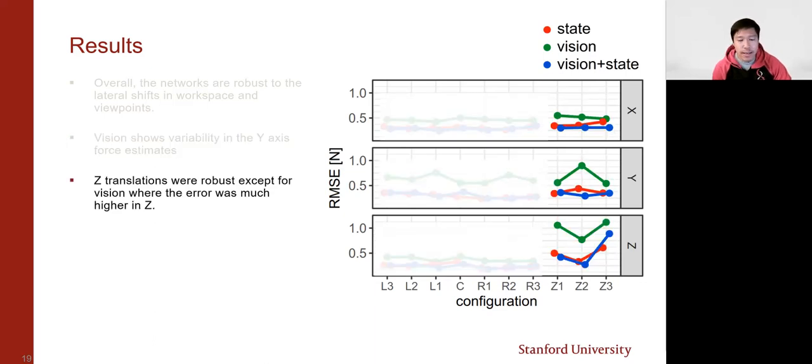More interestingly here, we see that for z-translations, they do not show much difference from the seen position z2 compared to the unseen z1 and z3 in the x and y, especially for the state and the vision state networks. But one thing to note is that there is an exception in the z-direction forces. We see that the vision network performs very poorly, while the state and vision state networks also do not do so well on the unseen data.